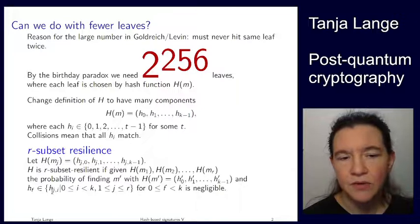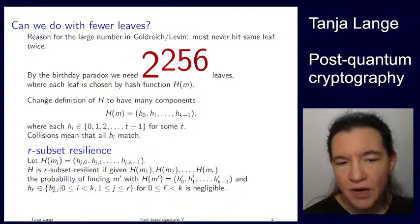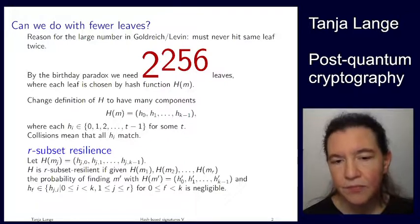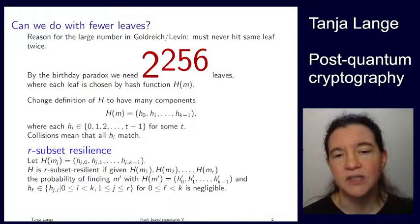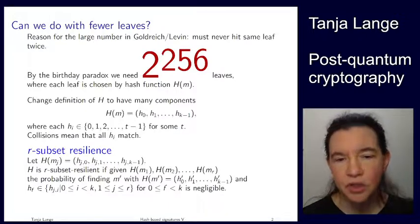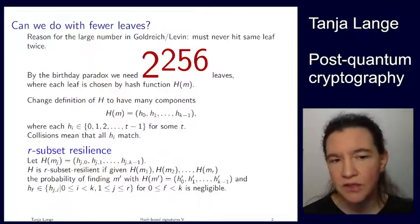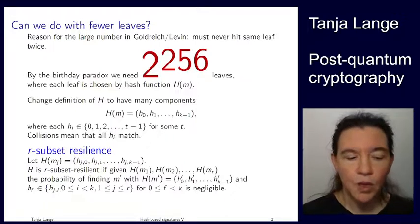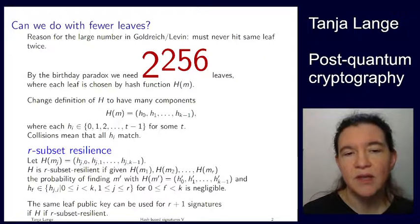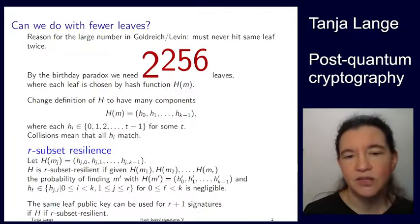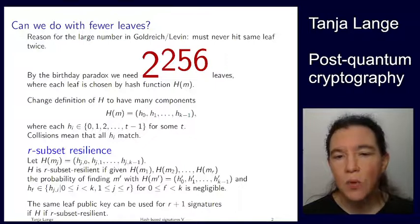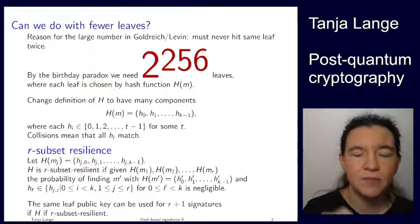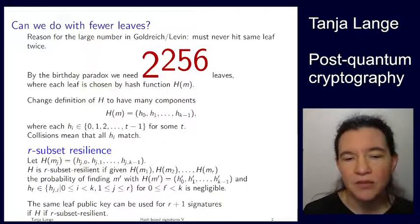So each of these h prime is in the set that is given here. So it is for one of the j messages, one of the r messages. It's one of the k components. And so if your hash function is such that this probability is negligible, then the hash function satisfies the definition of r-subset resilience. And so if you're using a signature scheme using this hash function, then instead of having a one-time signature, you're having something which you can use for each sub-leaf public key for r plus 1 signatures.